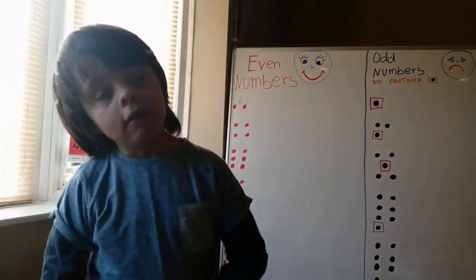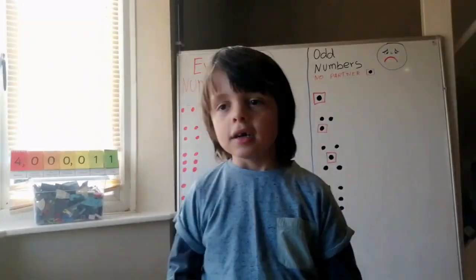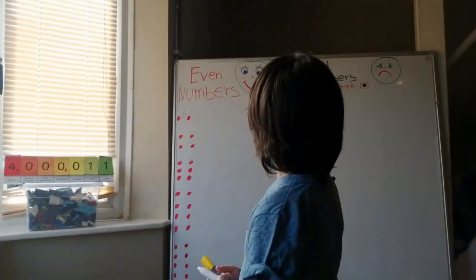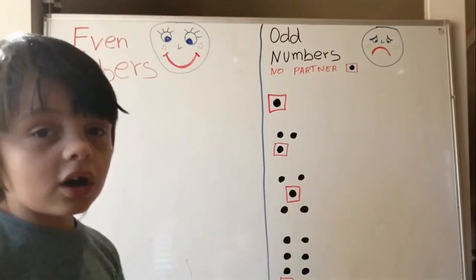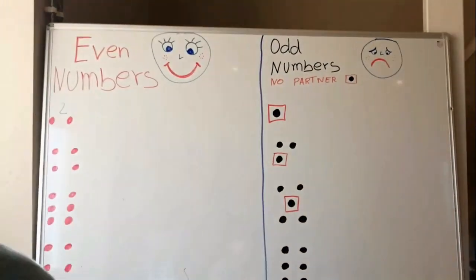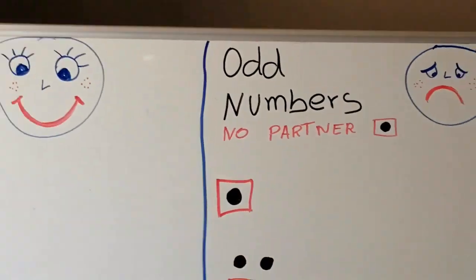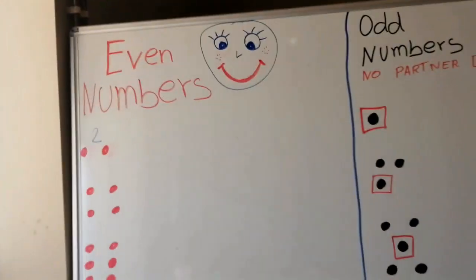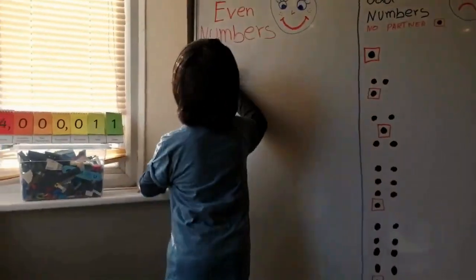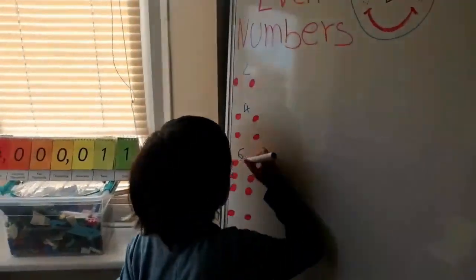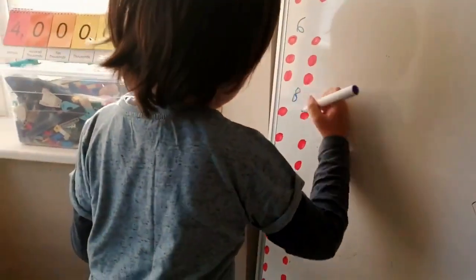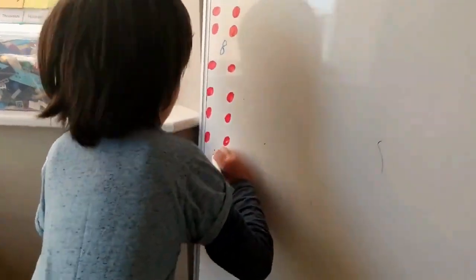Hi guys, today we are going to learn even numbers and odd numbers. The odd numbers have no pattern - they are sad. The even numbers have patterns - they are happy. Even numbers are two, four, six, eight, and then...